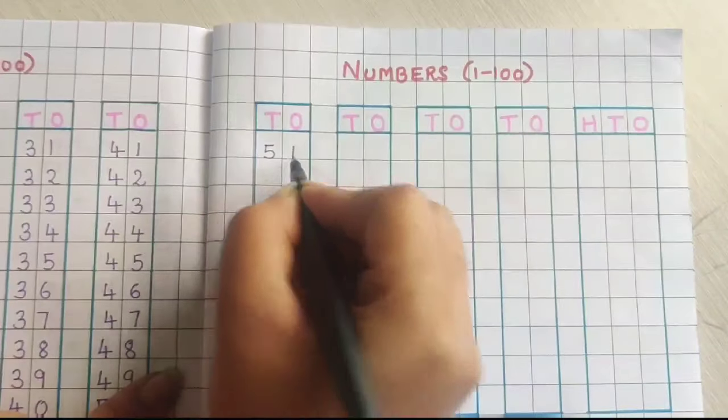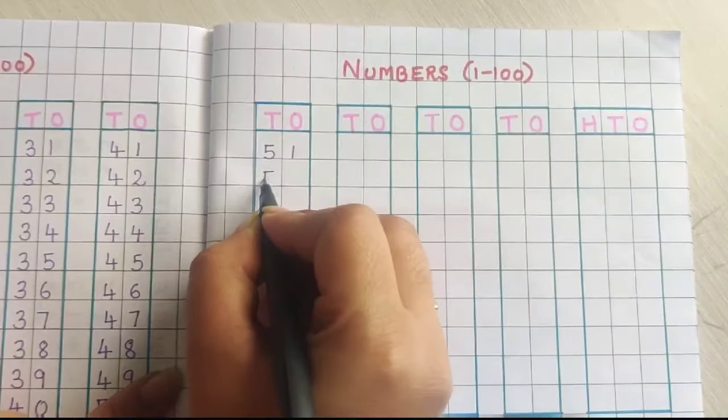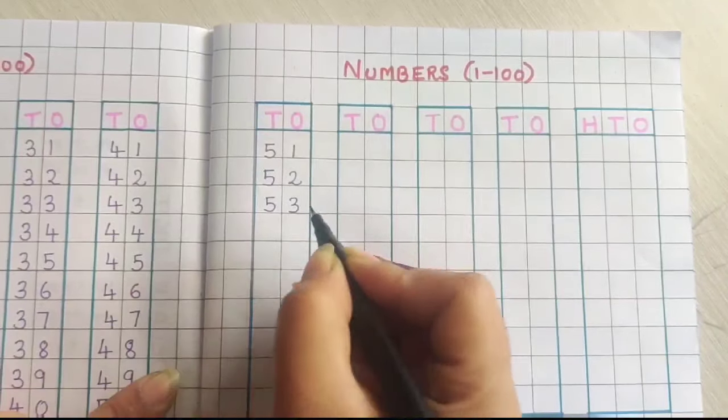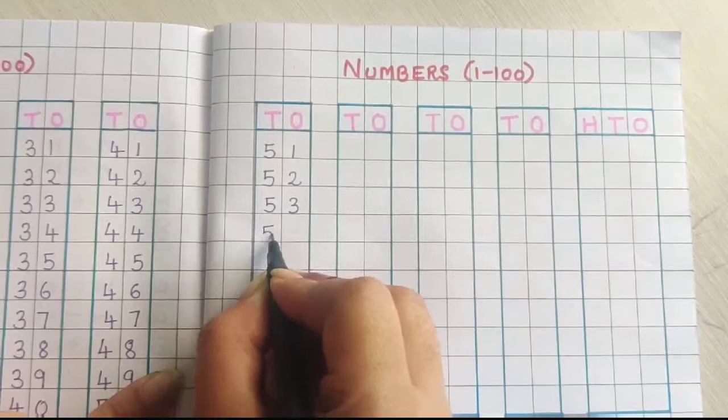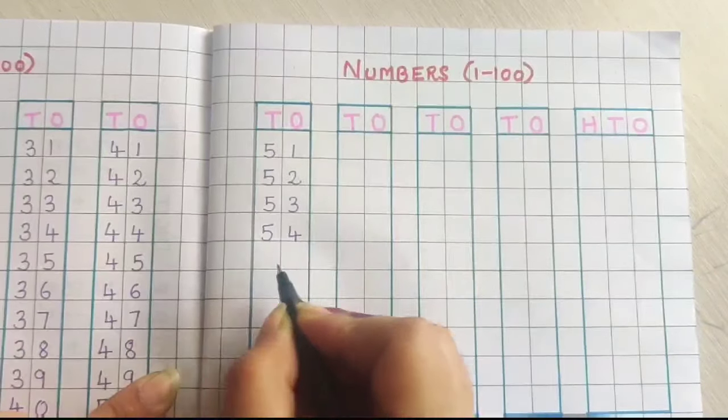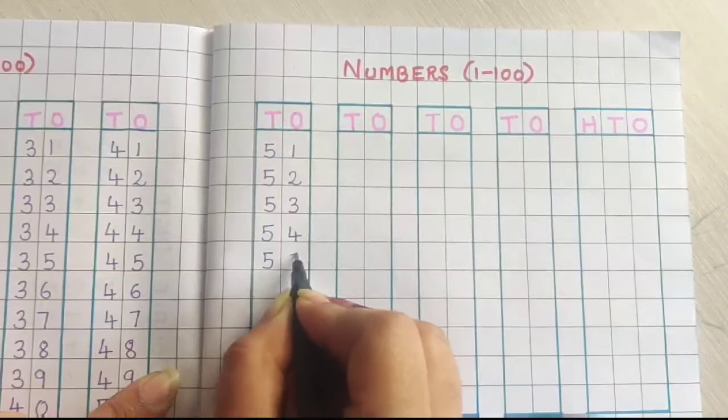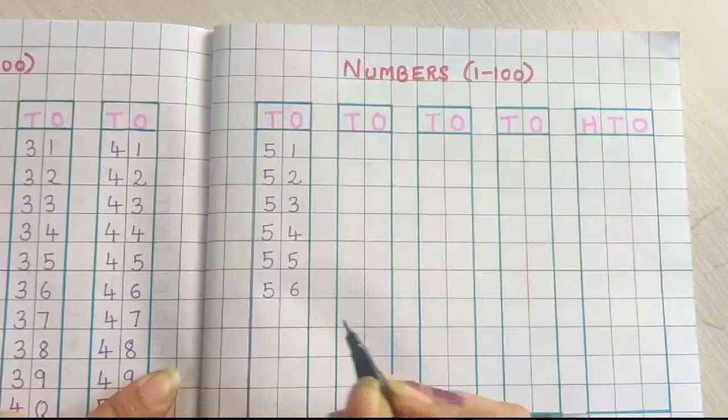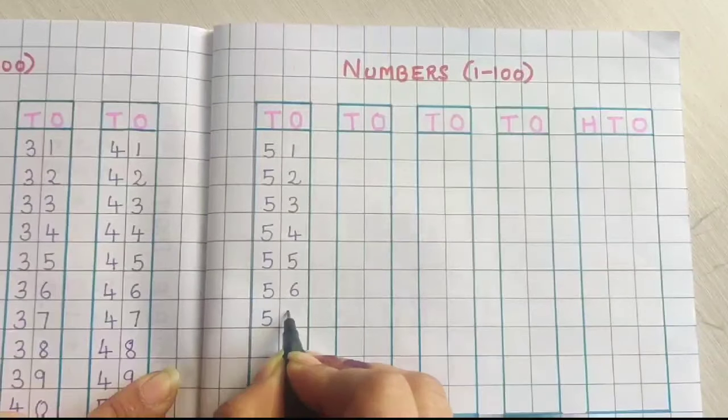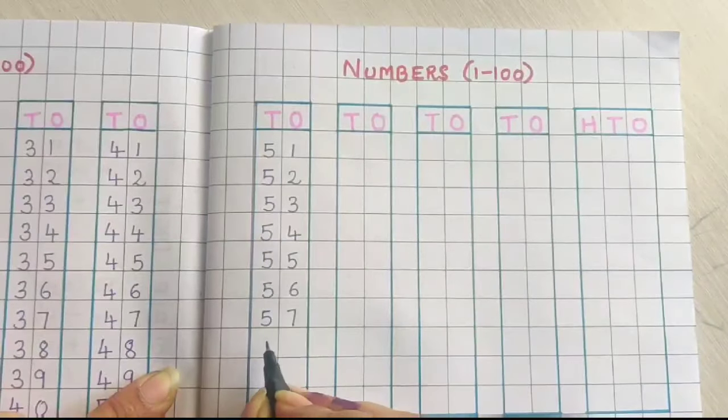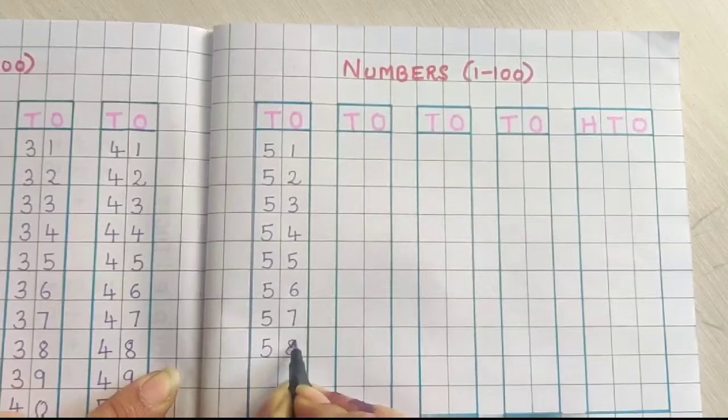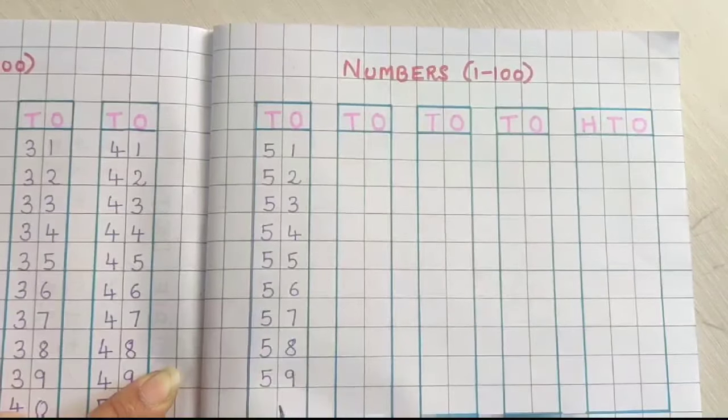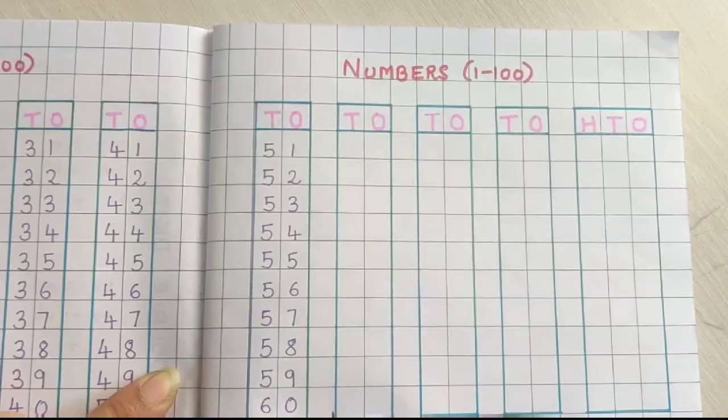5, 1, 51. 5, 2, 52. 5, 3, 53. 5, 4, 54. 5, 5, 55. 5, 6, 56. 5, 7, 57. 5, 8, 58. 5, 9, 59. 6, 0, 60.